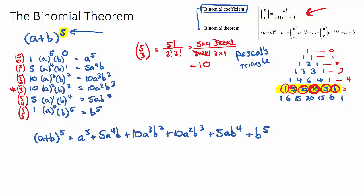So this is how we do a full binomial expansion: we need our coefficients, we take each of the terms and give them powers, those powers need to add up to whatever our main power is, and then we have all of our terms. Often in IB exams they don't ask for a full expansion — they'll just ask for one term, and you just need to identify which row you need to find.